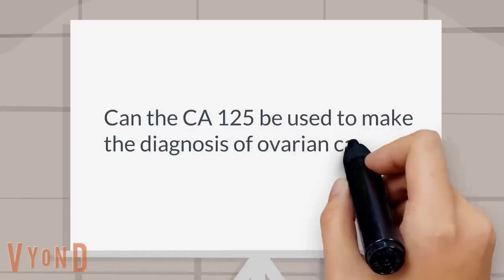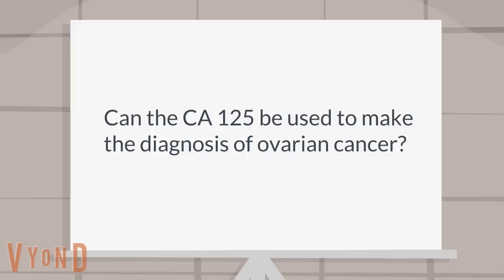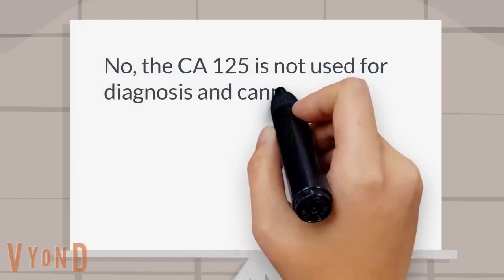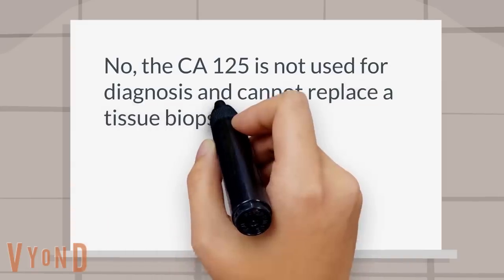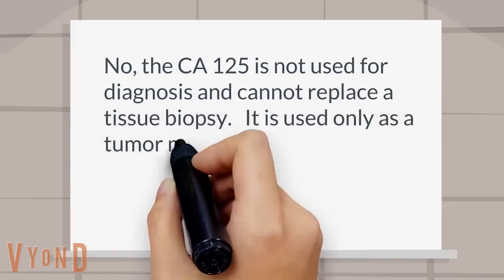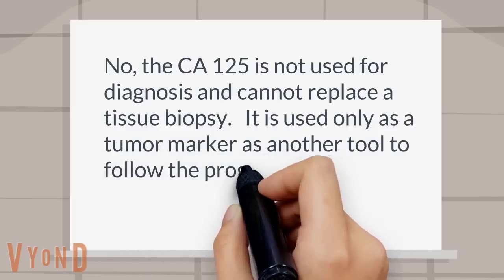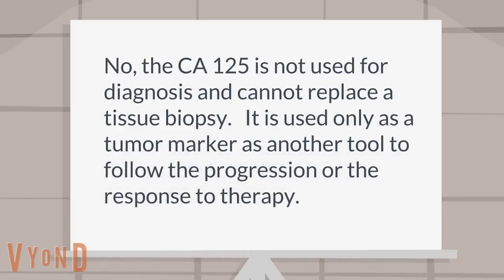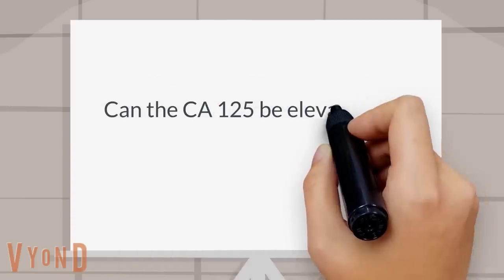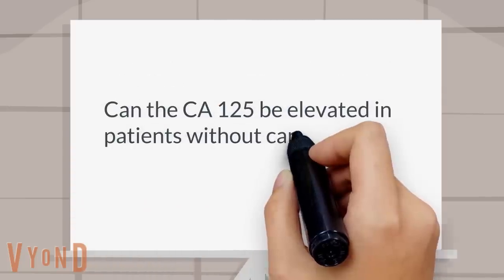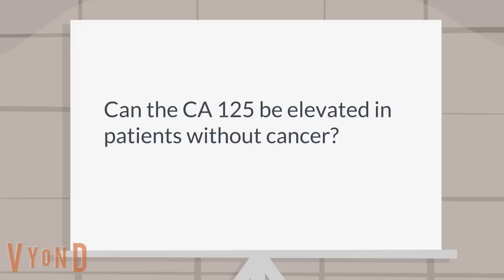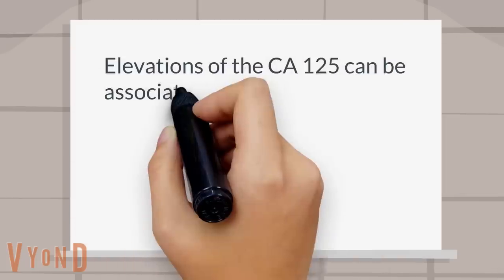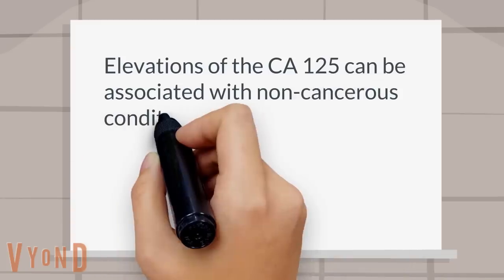Can the CA-125 be used to make the diagnosis of ovarian cancer? No. The CA-125 is not used for diagnosis and cannot replace a tissue biopsy. It is used only as a tumor marker as another tool to follow the progression or the response to therapy.